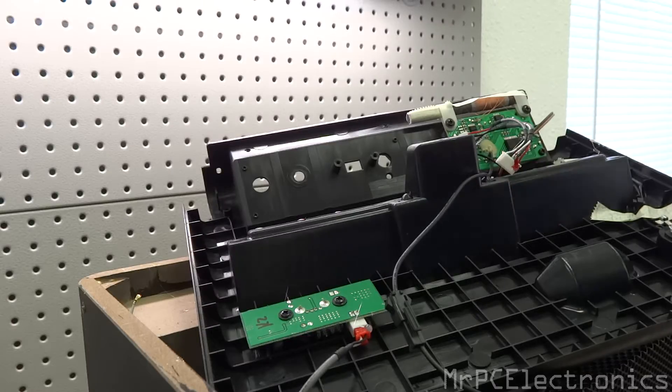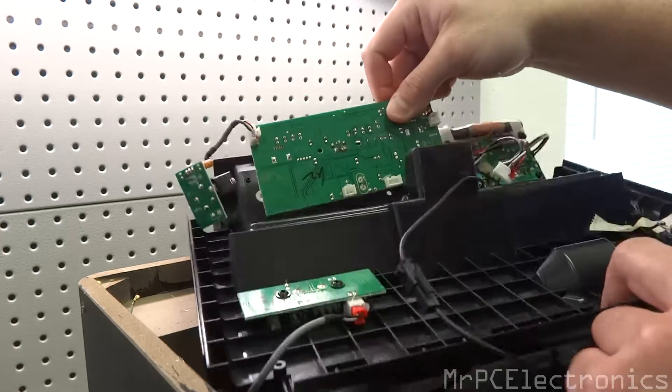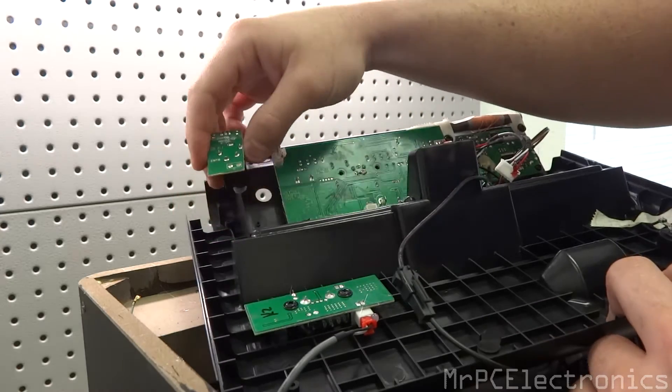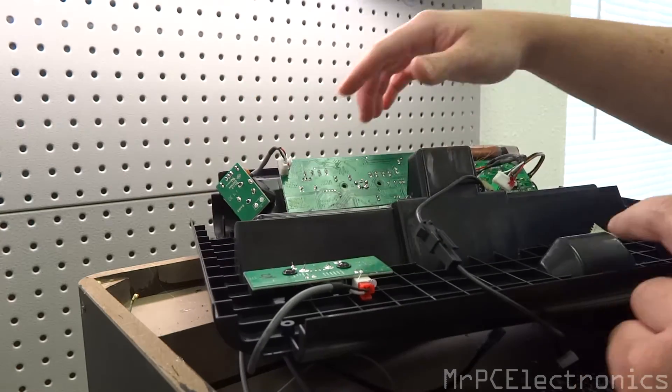Now for reassembly, it's quite simple. We take our board and we just put it right here on the face plate, put our other bigger audio jack in there. We take our two screws, we screw it in here.